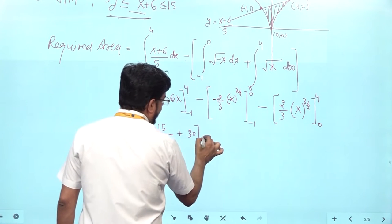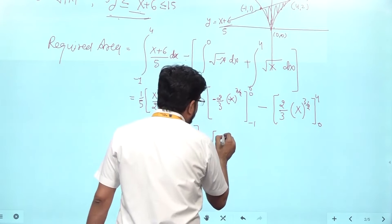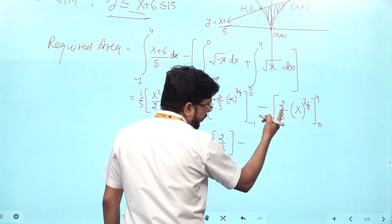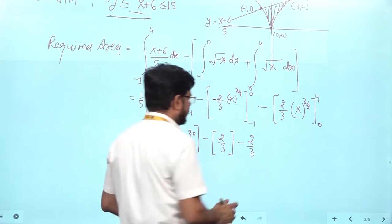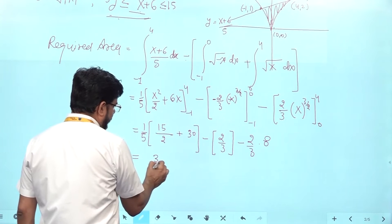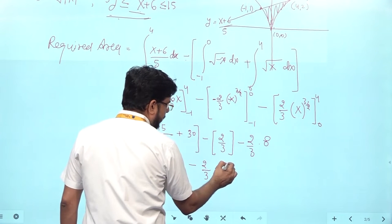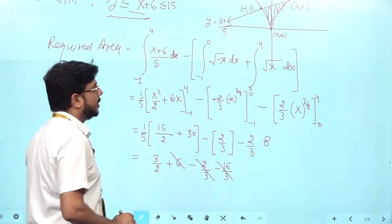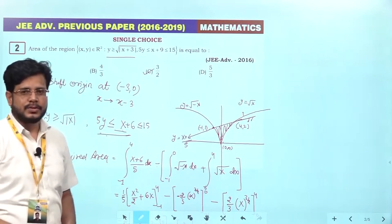Putting in the values: (1 by 5) times [16 minus 1 = 15, plus 6 times 5 = 30], giving 9. Then the integrals: putting limits for the lower curves, we get 2 by 3. Final calculation: 3 by 2 plus 6 minus 2 by 3 minus 16 by 3, which simplifies to 18 by 3 equal to 6, which cancels, leaving 3 by 2. So the right answer is option C. Let's go to the next question.